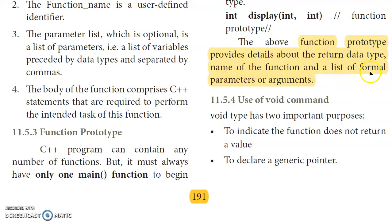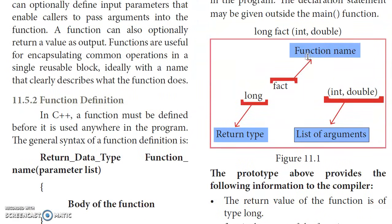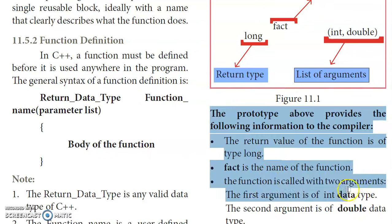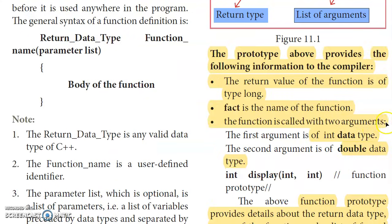For example, power of 5 raised to 5 gives 625. The function prototype includes formal parameters and actual arguments. For example, the prototype long fact(int, double) means the function is called with two arguments — one of int data type and one of double data type.